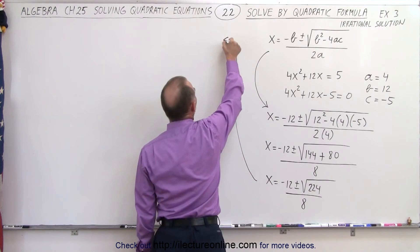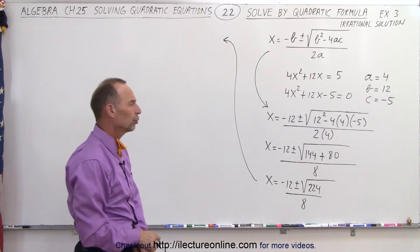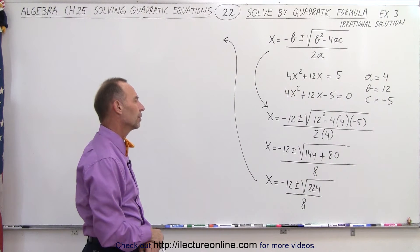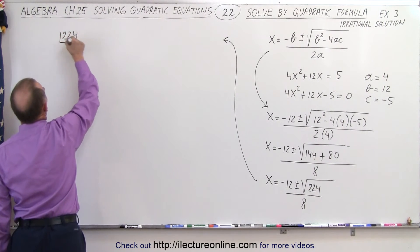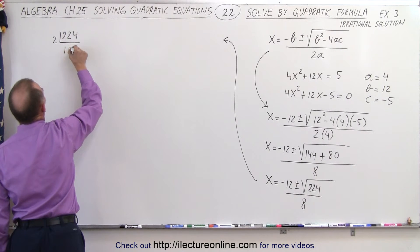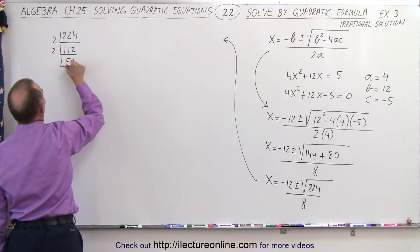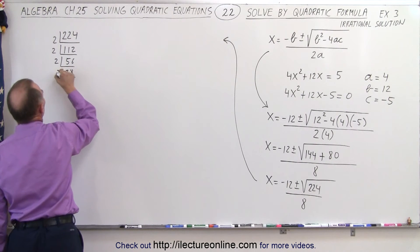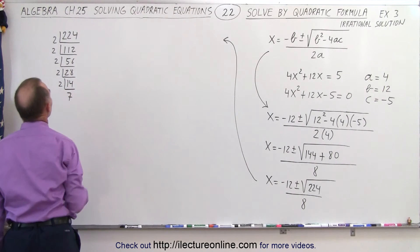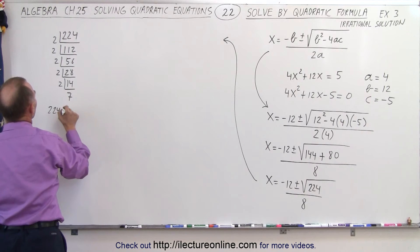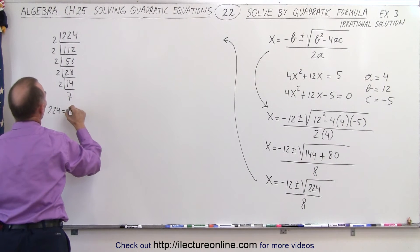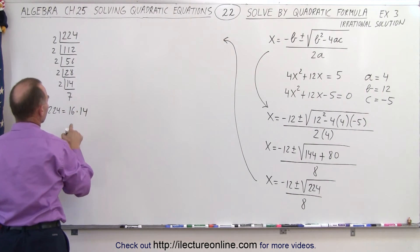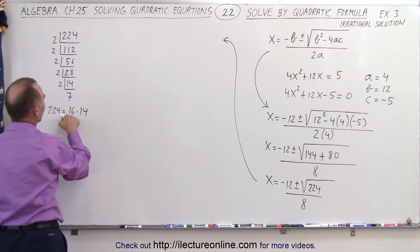Can we simplify √224? Let's factor 224 by dividing by 2 repeatedly: 224 ÷ 2 = 112, ÷ 2 = 56, ÷ 2 = 28, ÷ 2 = 14, ÷ 2 = 7. So 224 = 2 × 2 × 2 × 2 × 2 × 7, which is 32 × 7, or equivalently 16 × 14. Checking: 16 × 14 = 224. Correct.